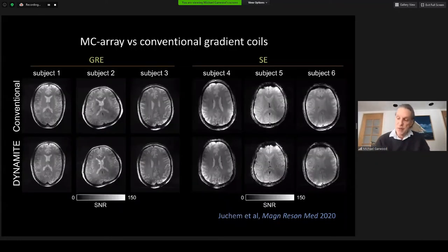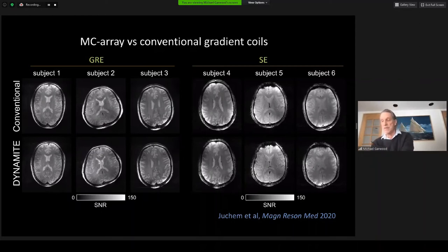Just recently, we showed that the MC array can be used instead of conventional gradients for imaging the human brain. Please note, these images were not acquired with the new head-only magnet, which is still under construction, but instead used the 4-Tesla magnet at Yale to demonstrate proof of principle. Gradient echo images are on the left and spin echo images are on the right. Note there is little difference between images acquired using conventional gradients, shown in the top row, versus the MC array in the bottom row.